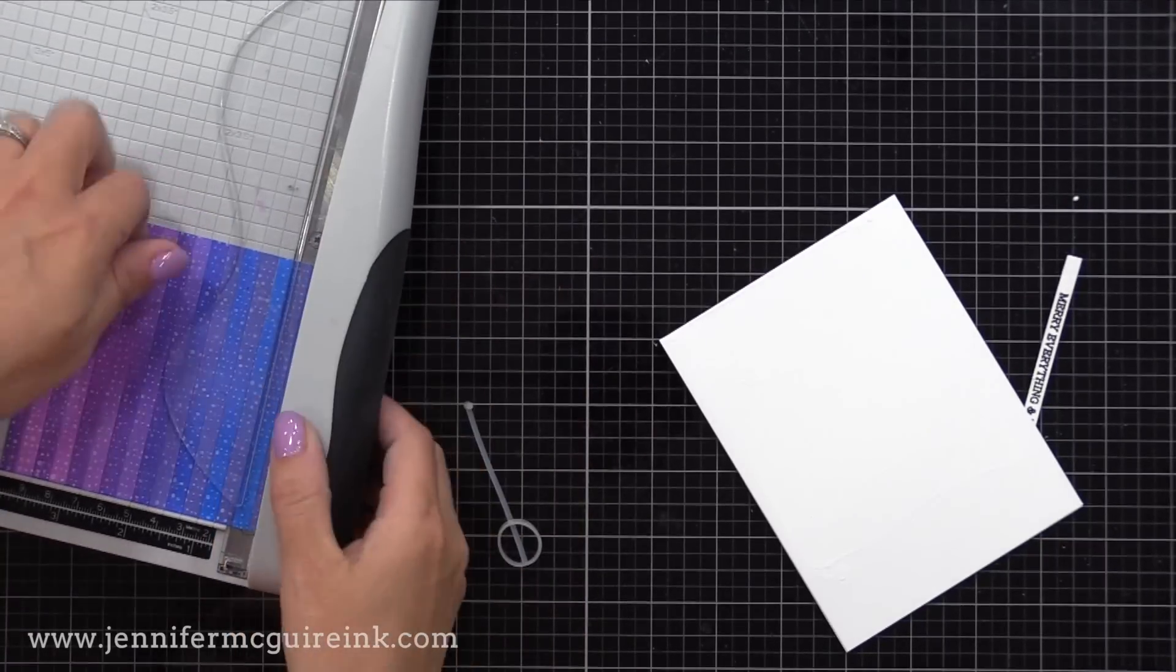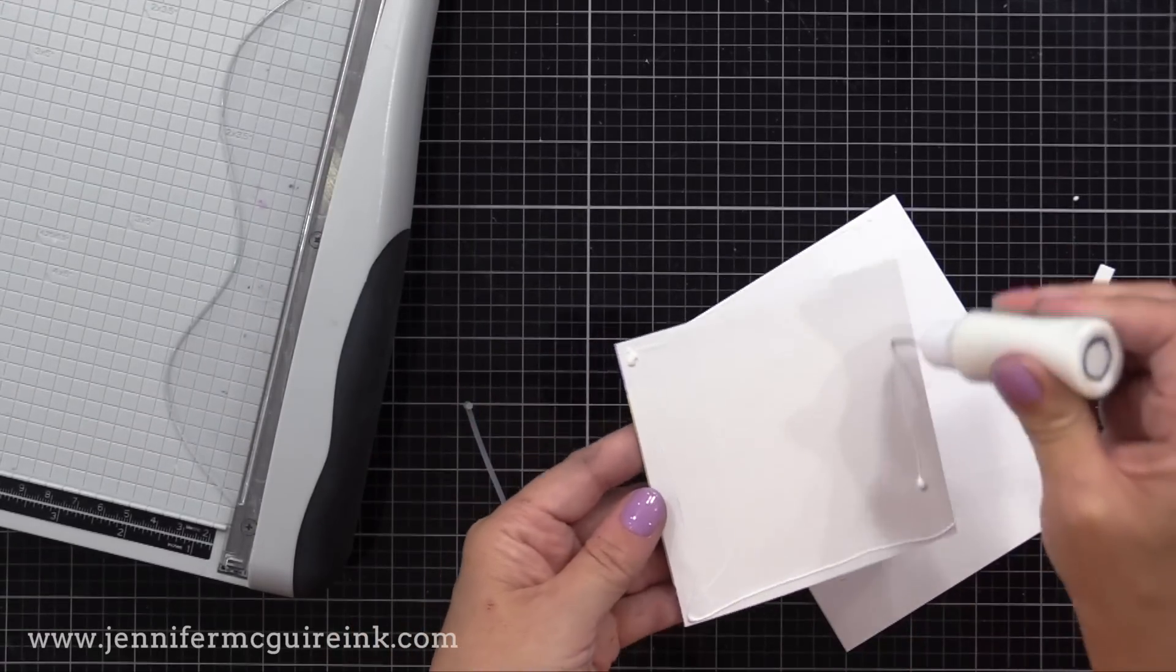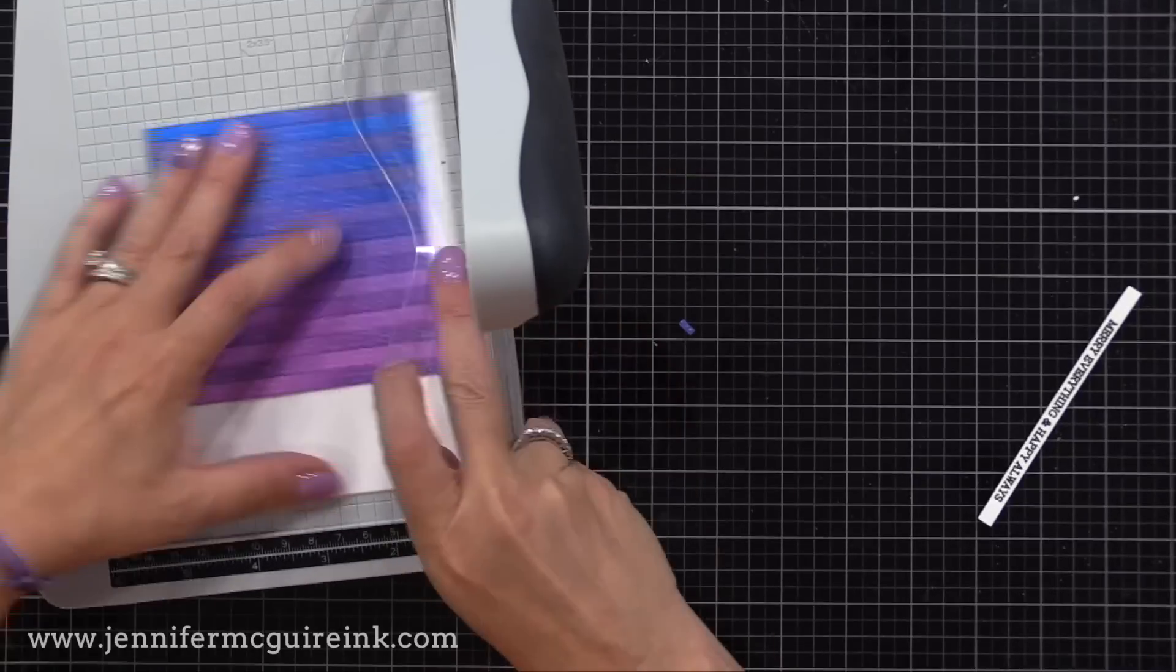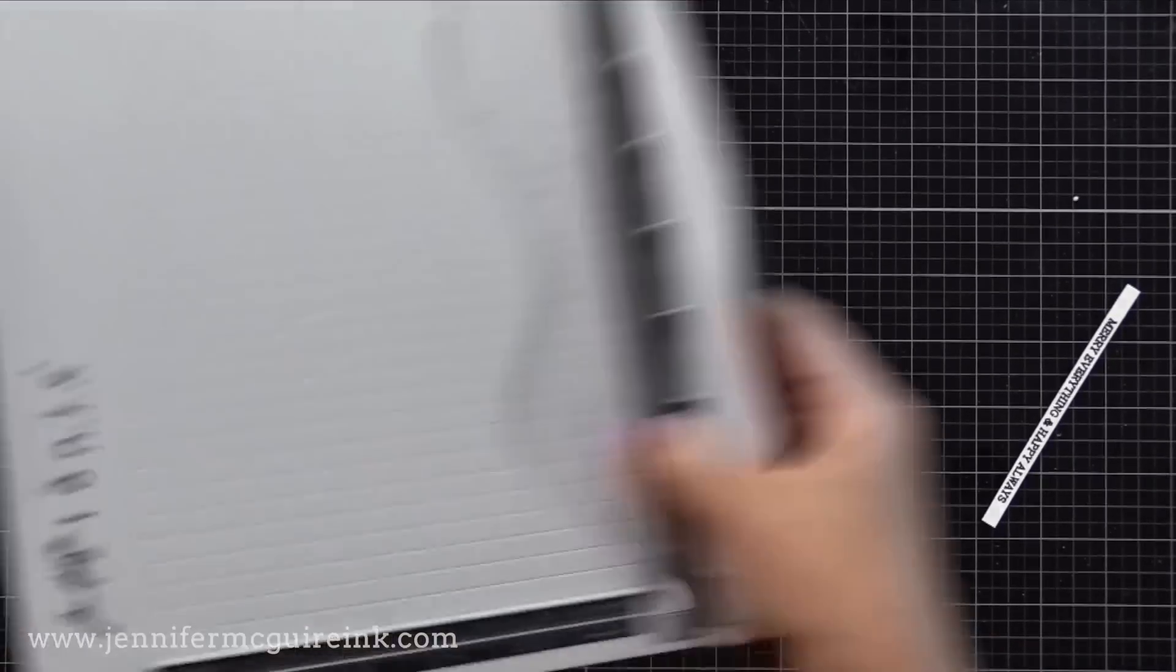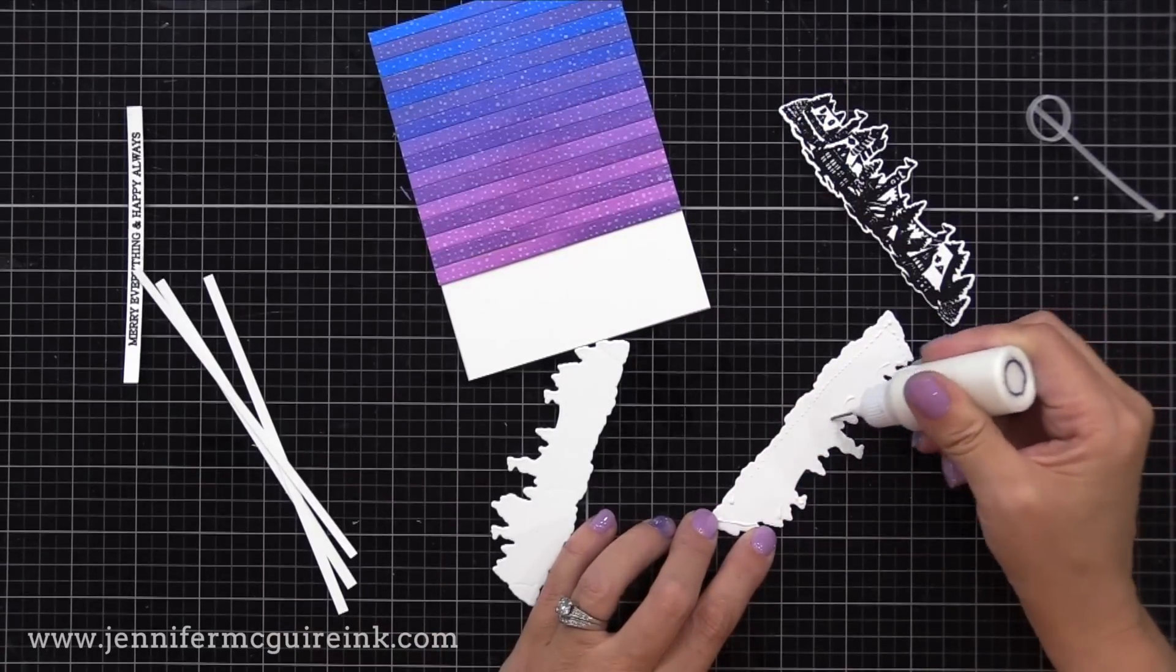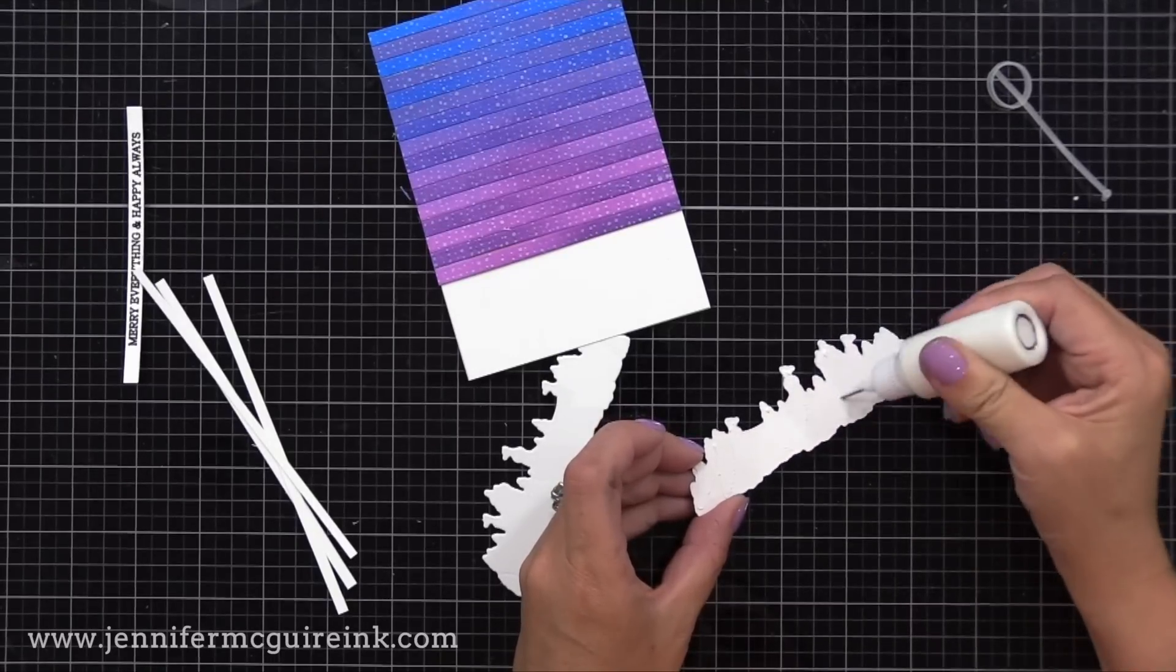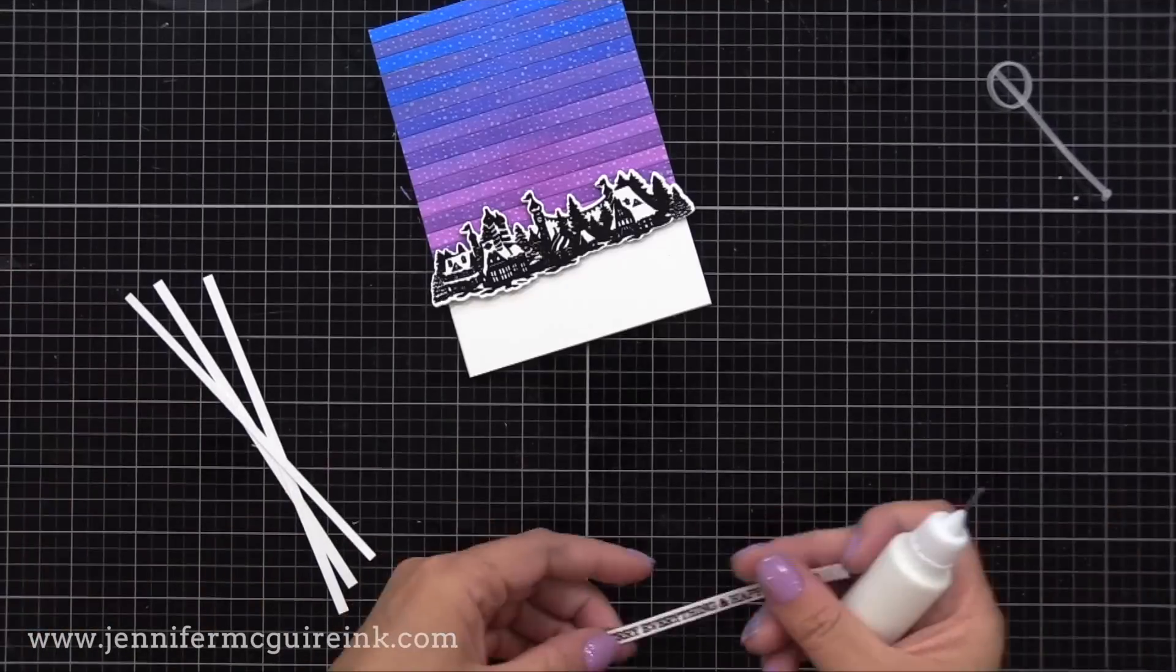Now we can put our card together. As I mentioned, I did trim my inked piece to be about three and three-quarter inches wide, so that I could create a narrow note card. I'm gluing it onto a four and a quarter inch wide note card here, but I will trim off the excess. I thought it'd be fun if my card was a little narrow so that one of our scene silhouette images hangs off the edge.